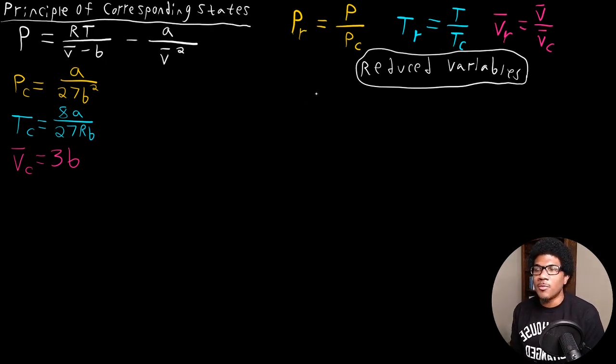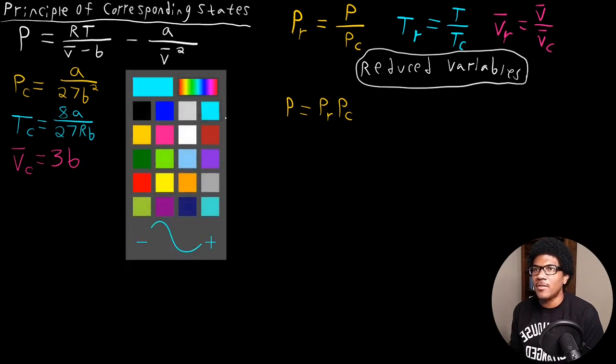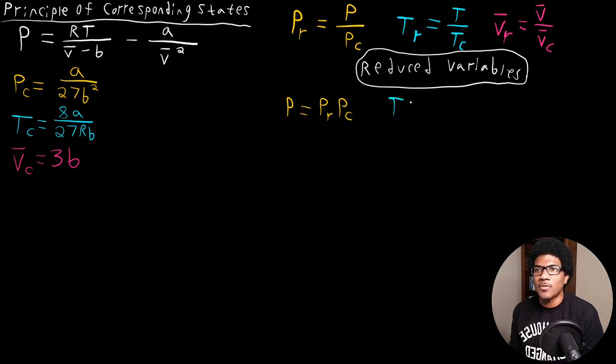What we can do here to analyze these reduced variables a little bit further, I want to re-express pressure in terms of the reduced pressure and critical pressure. So pressure is equal to PR times PC. All I did was just crank a little algebra there, multiply by PC on both sides. For the temperature, that's going to be equal to TR times TC. And for the volume, we have V-bar is equal to VR times VC.